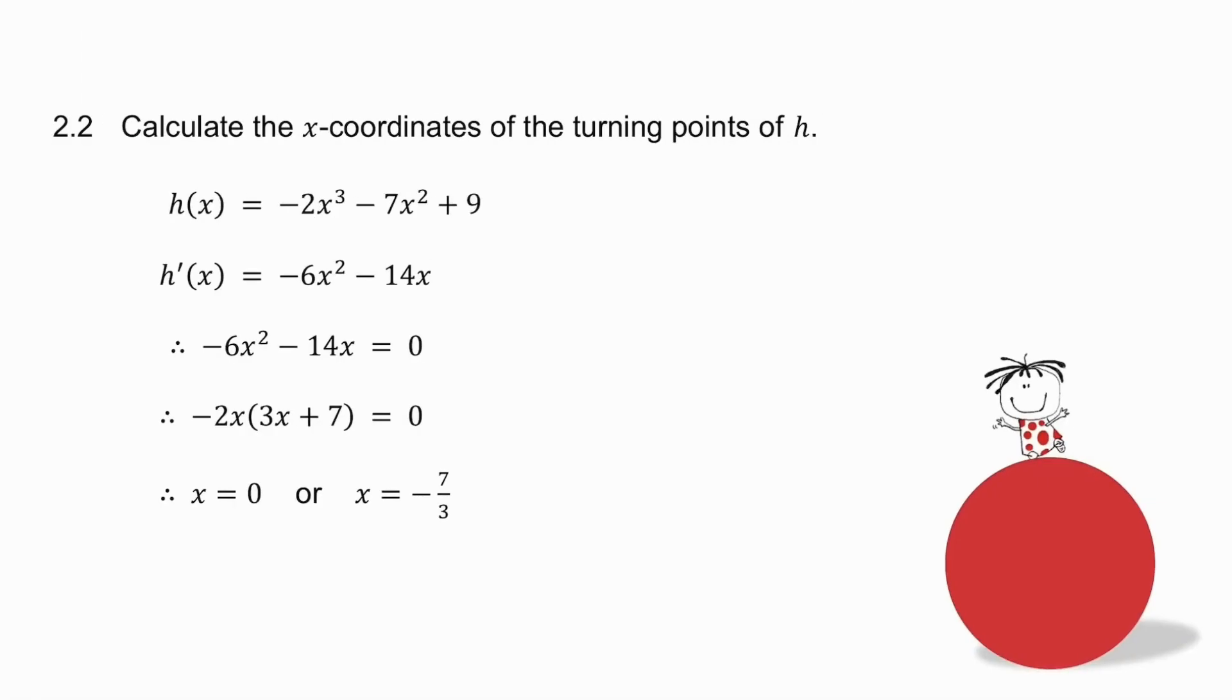2.2 asks you for the x coordinates of the turning points. Remember the turning points of any graph: you take the derivative which is there and you make it equal to zero. Solve for x, and the question simply said to calculate the x coordinates, so that's my answer.